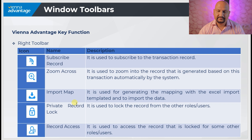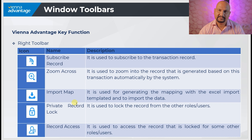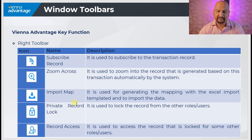On the right toolbar you also have subscribe records, used to subscribe to the transaction record. Then zoom across, used to zoom into the record that is automatically generated by the system based on the transaction. Then import map, which opens the Excel import utility so you can map your Excel template with the system and import data. Then private record access, used to lock the record from other roles and users. Then record access, used to access records that are locked for other roles and users.